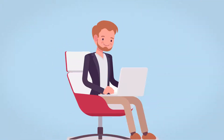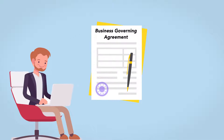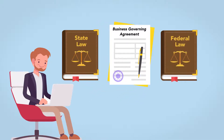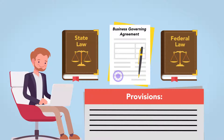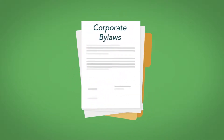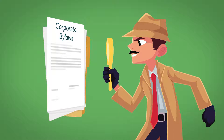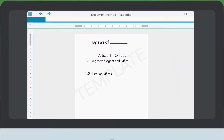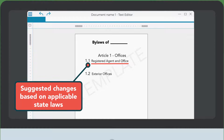In our first four modules, we covered what business governing agreements are, their relationship to state and federal laws, and basic and more advanced provisions that the drafters can include in them. In this final module, we'll apply these principles to a simple set of generic corporate bylaws. This will be an issue-spotting exercise, beginning with sample provisions from templates, followed by suggested changes based on applicable state laws.